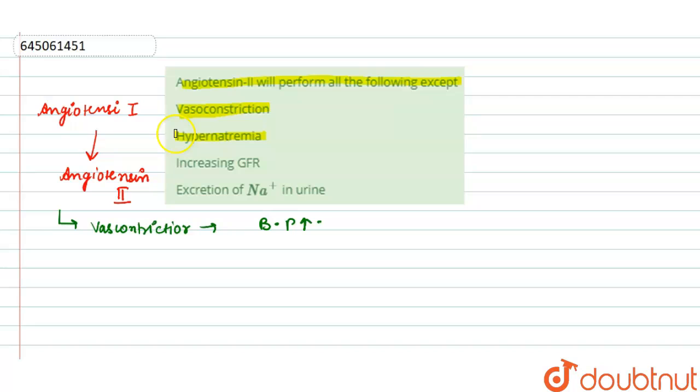That is hypernatremia. So here the hypernatremia, this is the condition which occurs due to the less intake of water, or when the person is taking less water. So this term is known as hypernatremia and this is not performed by the angiotensin.